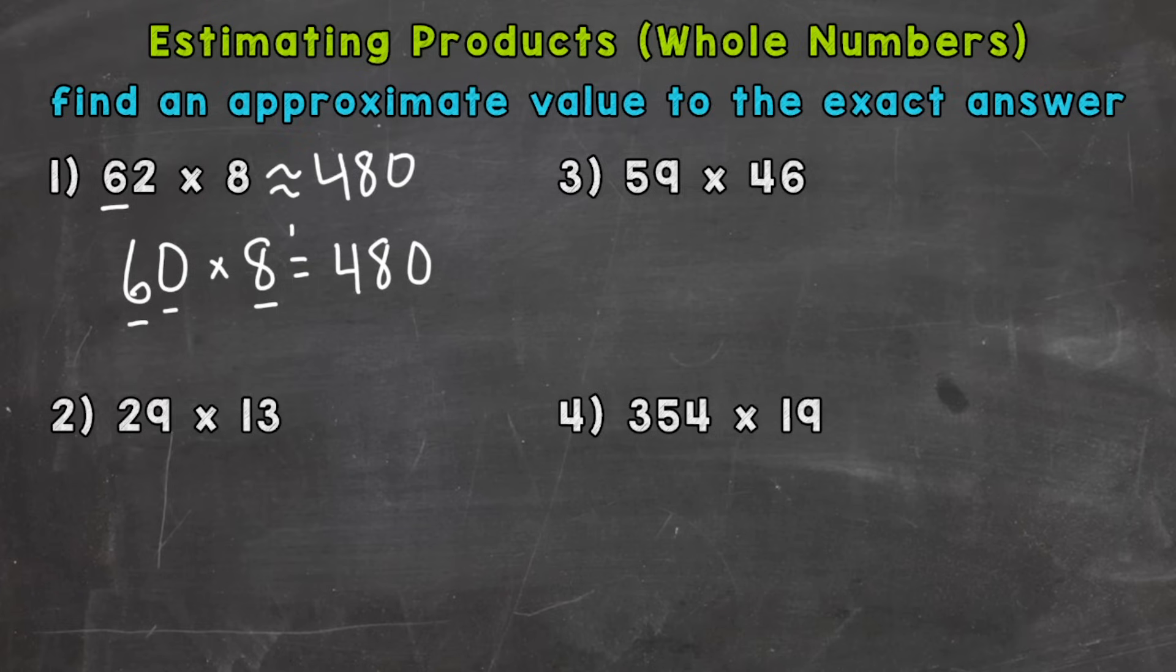So 62 times 8 is approximately 480. So this squiggly equal sign here, that means an approximate value or about. The actual answer, the actual exact answer to number 1 is 496. So you can see that our estimate was close to the exact answer.